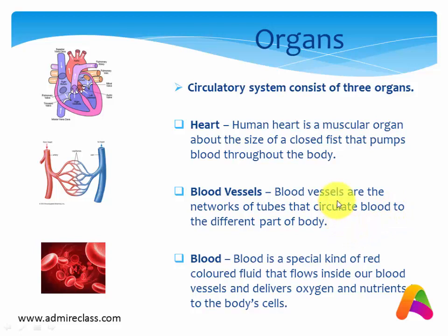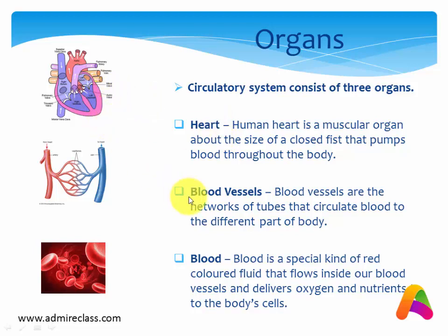Now we will read about the organs. The circulatory system consists of three organs. Number one is the heart — here is the picture of the heart. Next is the blood vessels — here is the picture of the blood vessels. And the last one is the blood — here is the picture of the blood.